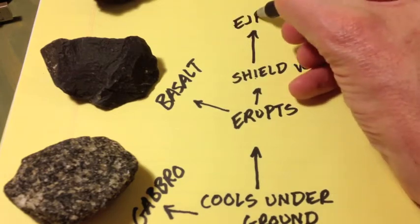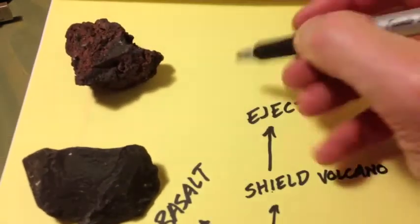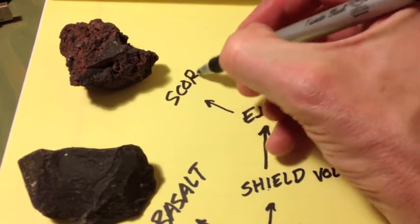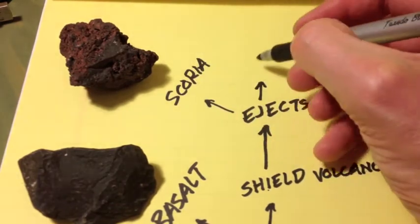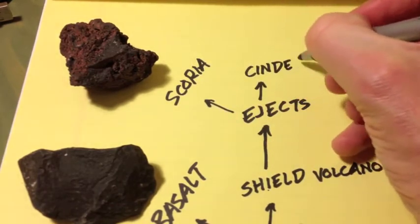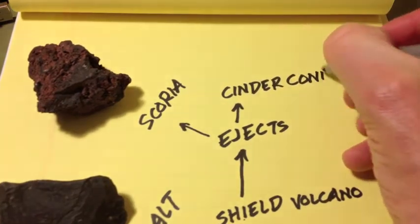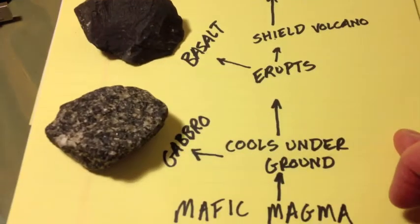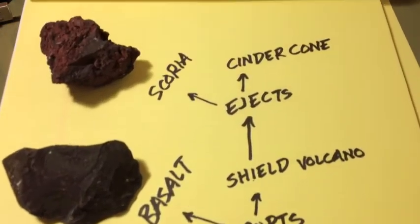Now, explode or eject that magma into the air, and it will cool instantly and trap bubbles to make scoria, also called cinders, and that will make a cinder cone, quite possibly. So, that's the mafic side of things.